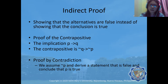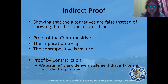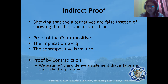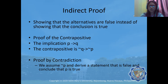For proof of the contrapositive: if you recall that if you have an implication P implies Q, the contrapositive is not Q implies not P. For proof by contradiction, we are going to assume not P — we negate P and derive a conclusion. Our objective is to derive a conclusion that is false, so that we can conclude that P is therefore true.